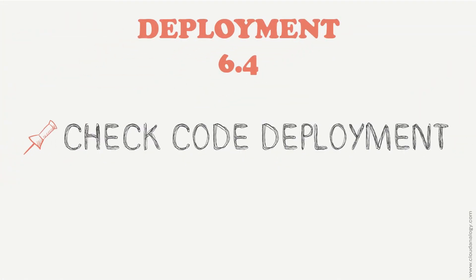The fourth point is: check code deployment properly. Always make sure that the components being deployed to production are on the latest version or the same version as of production.